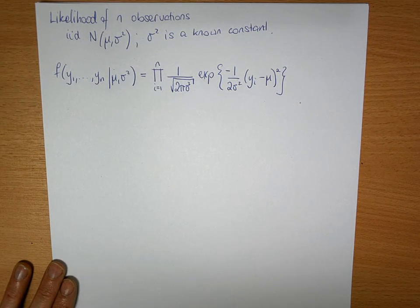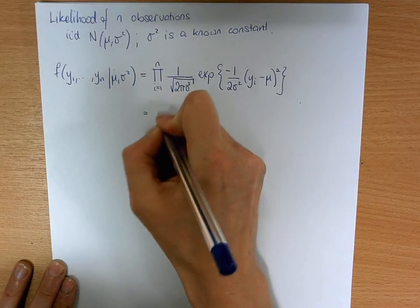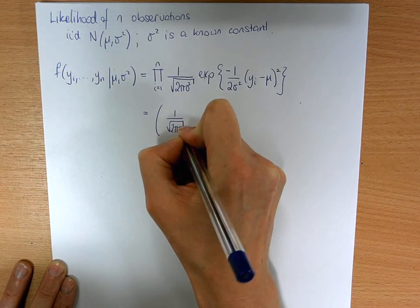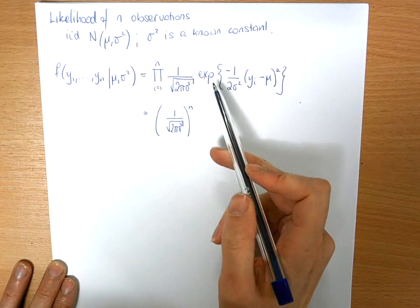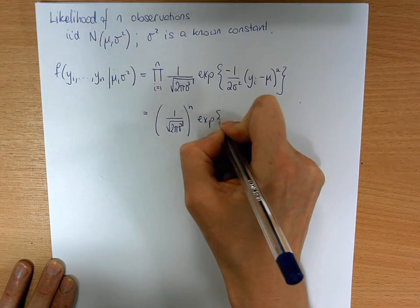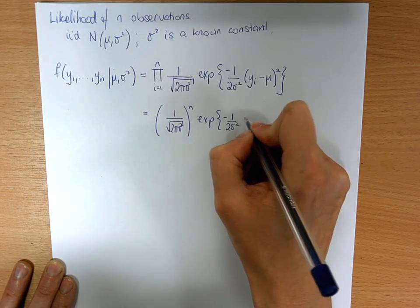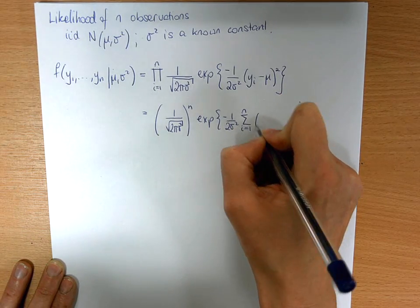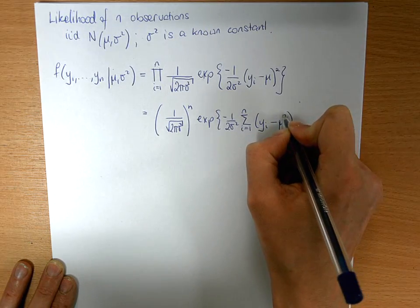This bit here is actually going to become a constant, so we can deal with that first: 1 over the square root of 2 pi sigma squared to the power of n. Then the product inside an exponential becomes a sum: minus 1 over 2 sigma squared, the sum from i equals 1 up to n of yi minus mu squared.